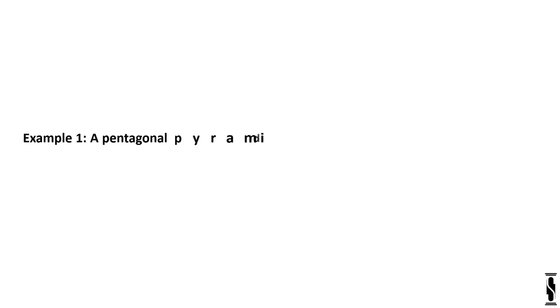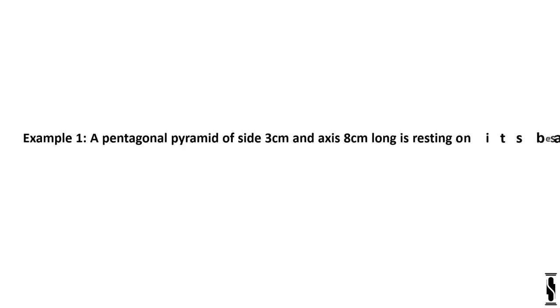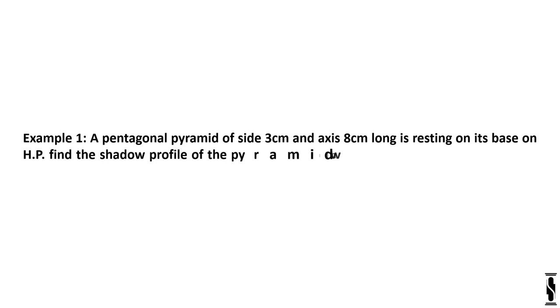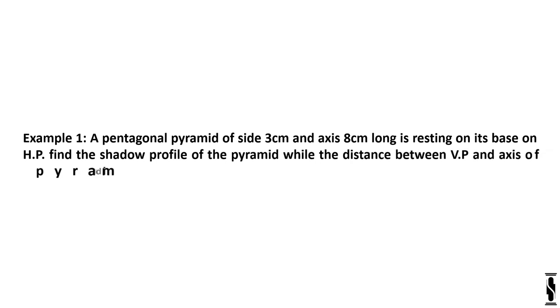Let's start with example number 1. A pentagonal pyramid of side 3 cm and axis 8 cm long is resting on its base on HP. Find the shadow profile of the pyramid while the distance between VP and axis of the pyramid is 9 cm.